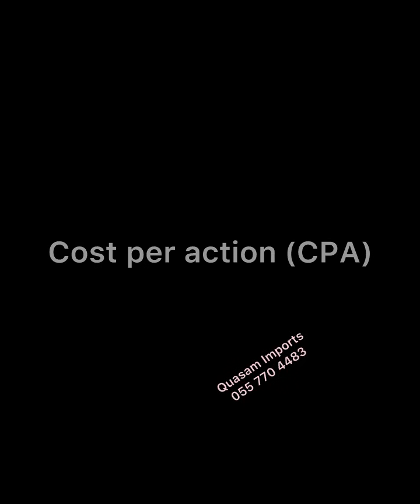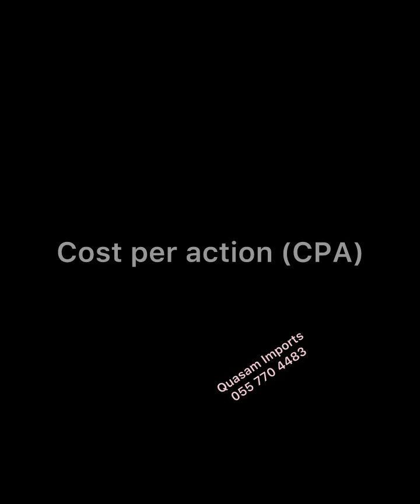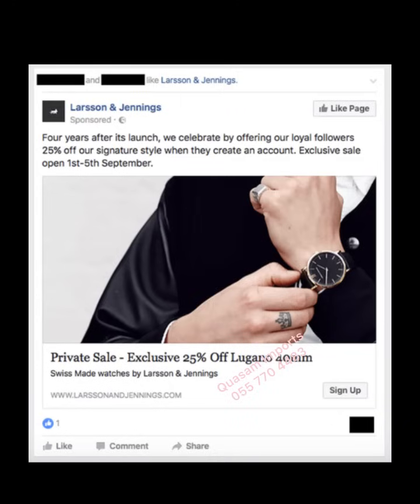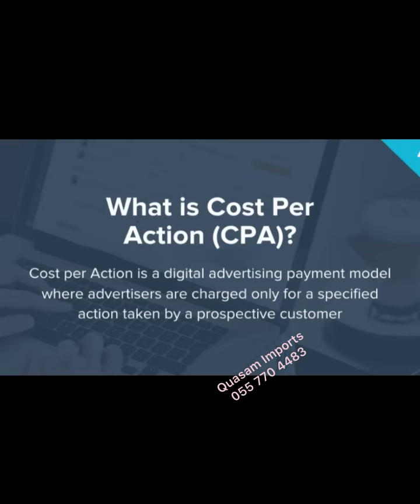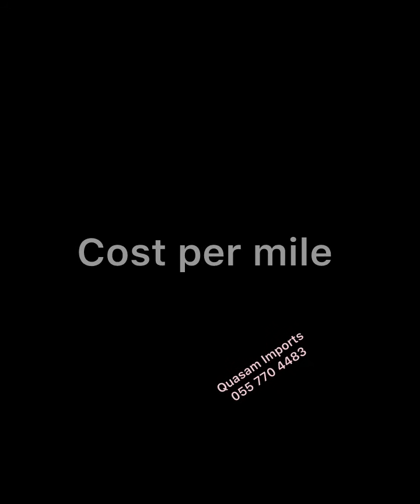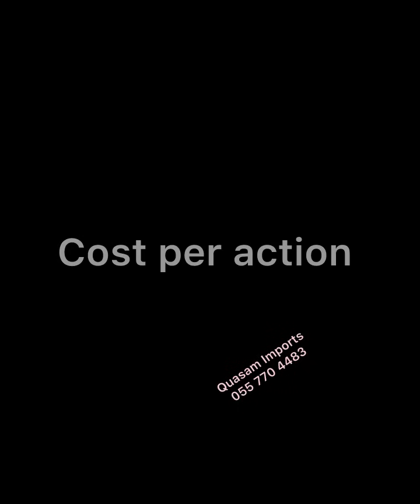The third model is CPA — Cost Per Action. With this method, you will be charged when a specific action is taken. For example, if you sell watches, you only pay when someone actually purchases that watch. So with CPA, you are charged only when a specific action is completed. Facebook charges advertisers based on these three models: CPC, CPM, and CPA.